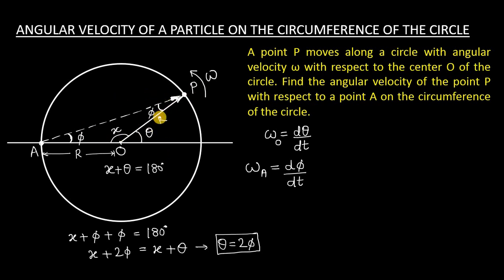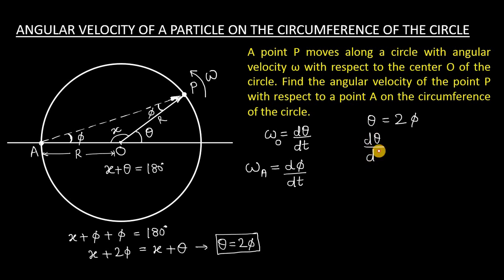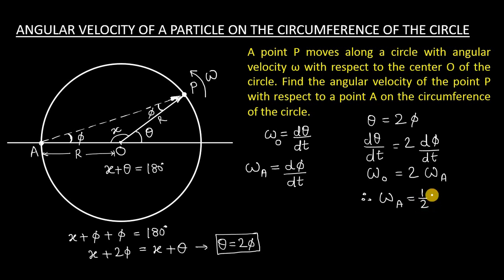If you already know circle geometry, a given arc subtends angle phi at any circumferential point and two times that angle at the center — that is another circle theorem. Either way, we have the relation theta equals 2 phi. Differentiating with respect to time: dθ/dt equals 2 times dφ/dt. Since dθ/dt is omega (angular velocity w.r.t. O) and dφ/dt is the angular velocity w.r.t. A, the answer is omega_A equals half of omega.